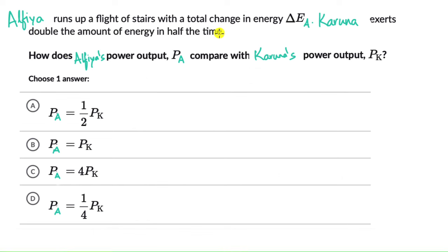Alfia runs up a flight of stairs with a total change in energy delta Ea. Karuna exerts double the amount of energy in half the time. The question is to figure out how does Alfia's power output Pa compare with Karuna's power output Pk.